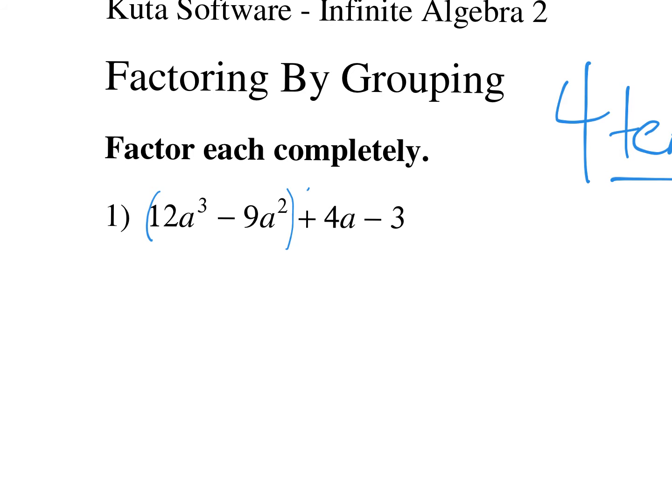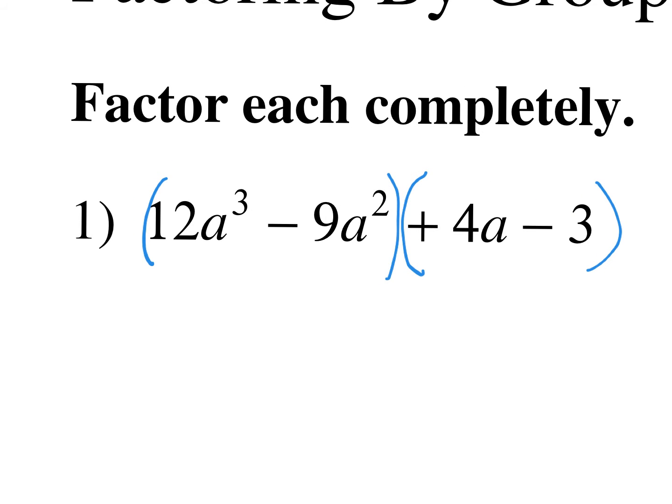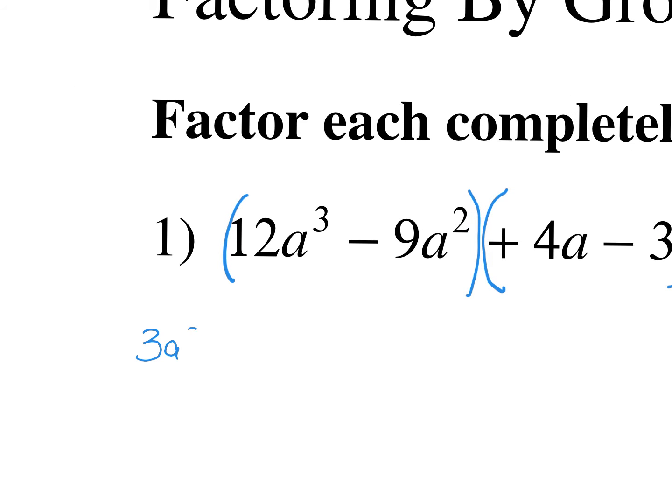When we have four terms, we're going to group the first two terms and the second two terms. Notice the plus sign in front of that third term — whatever sign is in front of that term goes with it inside your parentheses. What we're doing when we group is taking out the GCF in pieces. Looking at just the first set: 12a cubed minus 9a squared — what can I take out? 3a squared.